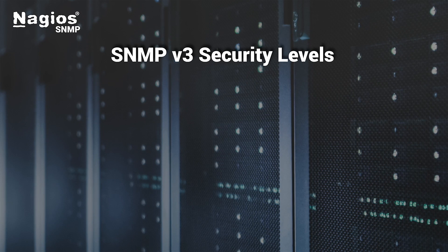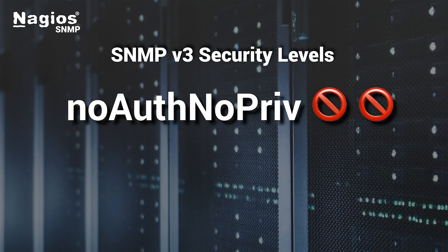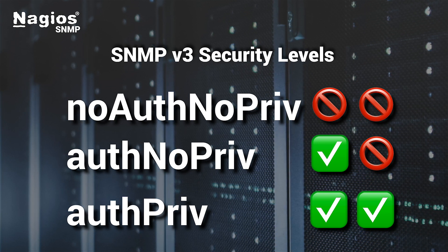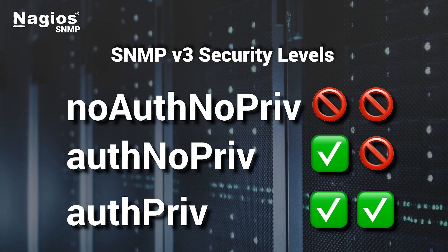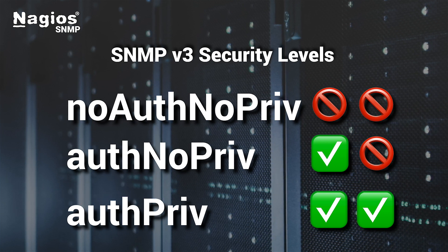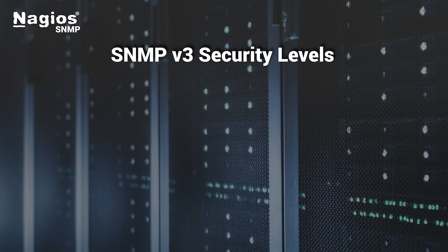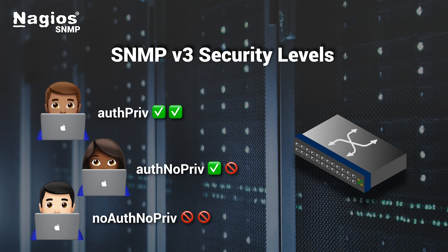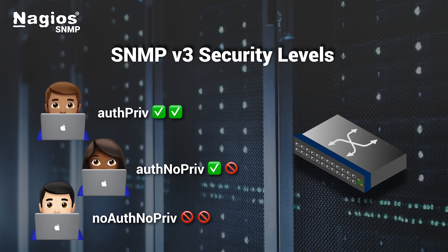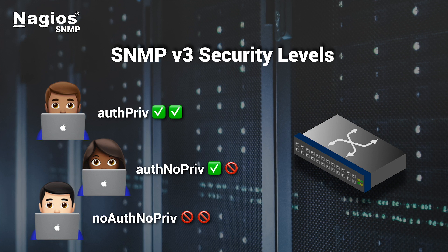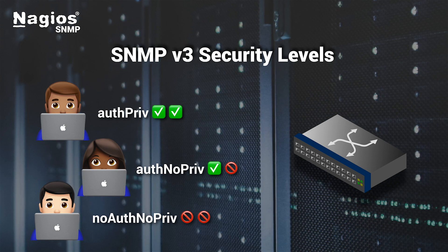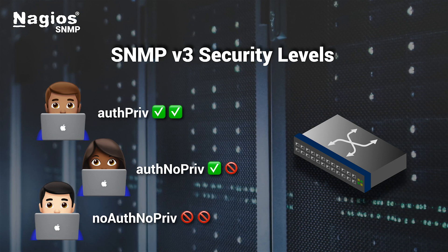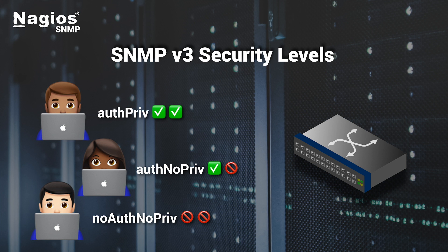There are three security levels in SNMP v3: NoAuthNoPriv, AuthNoPriv, and AuthPriv. There is no default security level for SNMP v3 — the security level must be configured on the monitored device on a per-username basis. On any particular device, such as a switch, different users could be set to different security levels. If you're setting up a device for SNMP v3 for the first time, you will choose the security level for the usernames. If you're monitoring a device already configured for SNMP v3, you will need to know the security level configured for the usernames you are going to use to monitor.